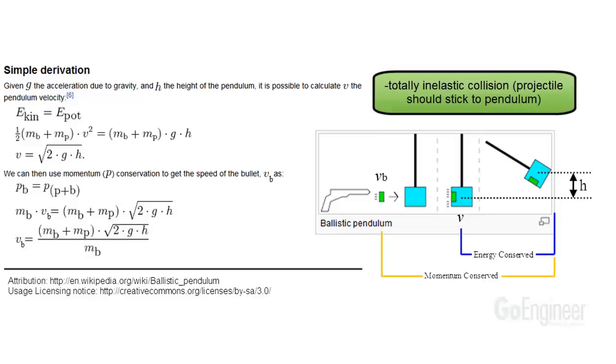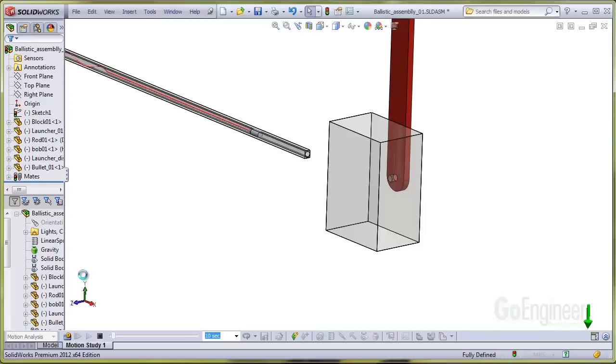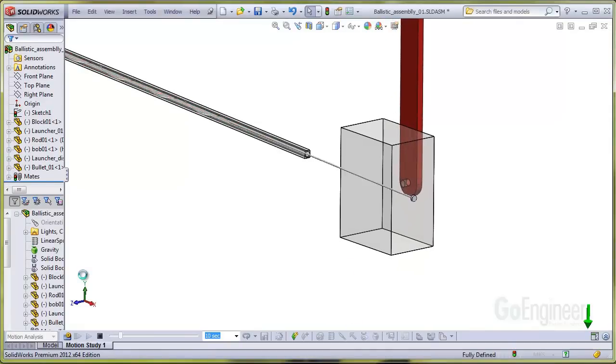These equations apply for a totally inelastic collision. In other words, the bullet projectile should stick to the pendulum and travel with the pendulum as shown in the diagram. However, in this SolidWorks motion study, you'll notice the projectile does not stick to the pendulum, instead it bounces.